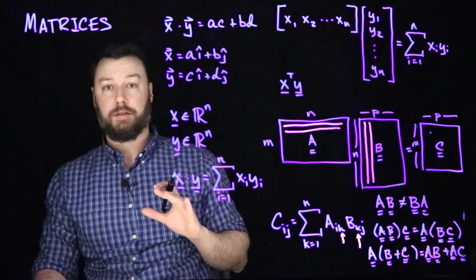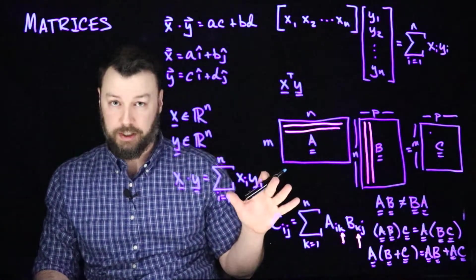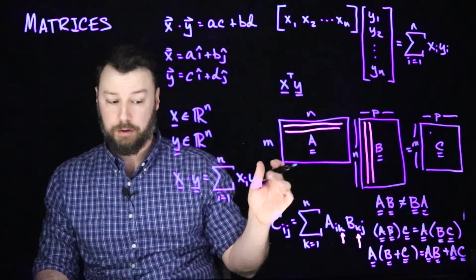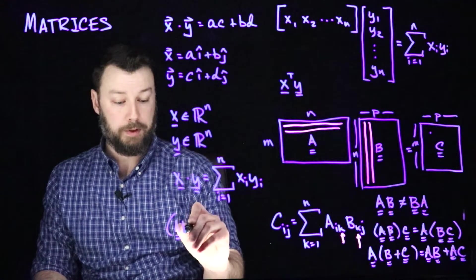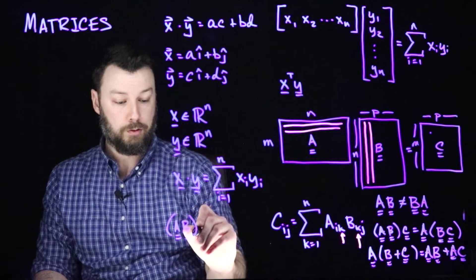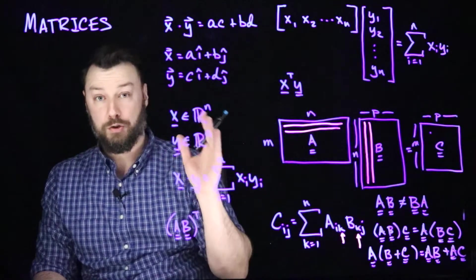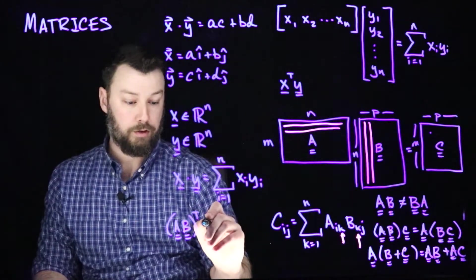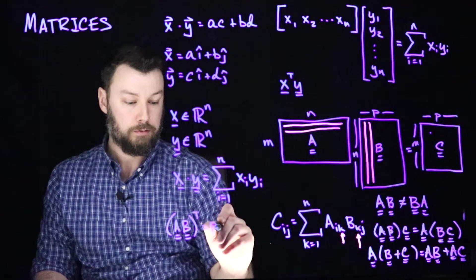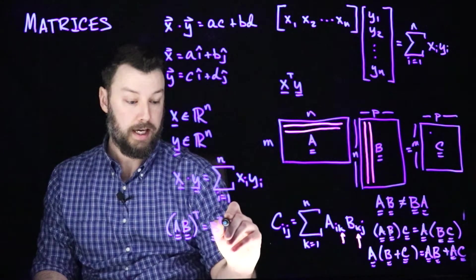And then the other thing to realize is the way matrix multiplication interacts with the transpose. So if I have AB transpose, then what happens is it transposes each of the inner matrices and then flips their order. And so we get B transpose A transpose.